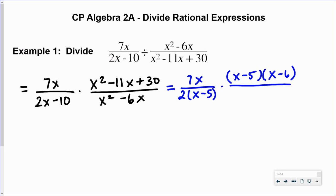On the bottom, we've got x squared minus 6x. So I'm going to factor out x. x squared divided by x is x, and negative 6x divided by x is negative 6.